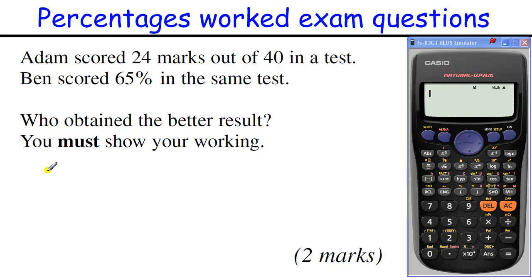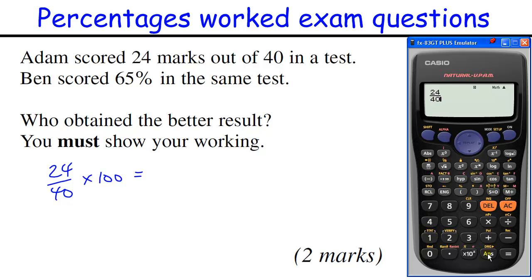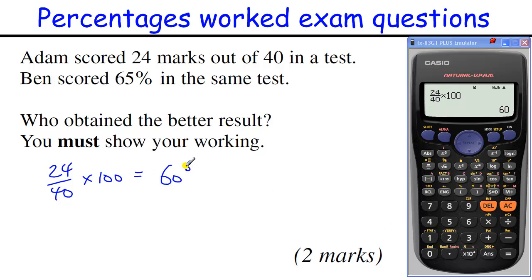Question number one: 24 out of 40, change that to a percentage. We times it by 100: 24 over 40 times by 100, and we need to come out of the fraction before we times it by 100, equals 60%. So Adam's got 60%, so Ben is better.